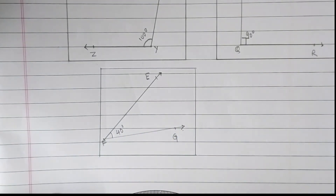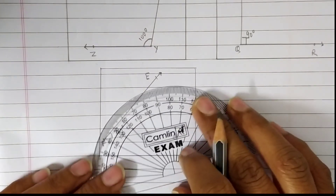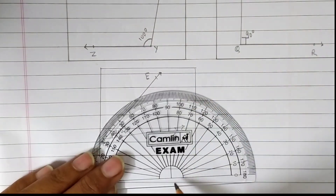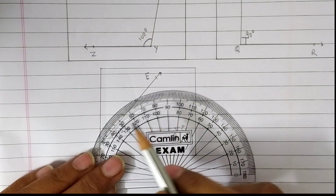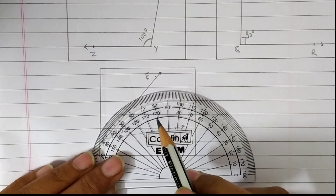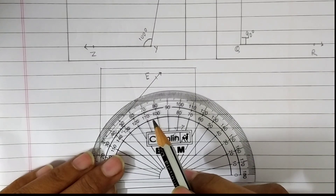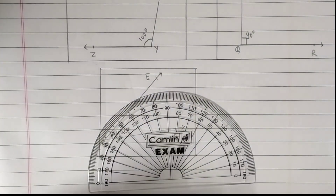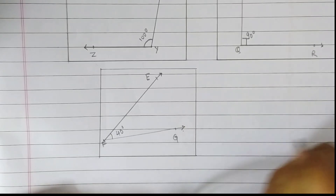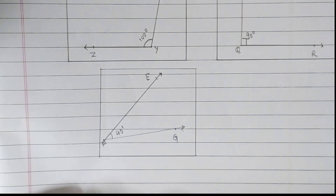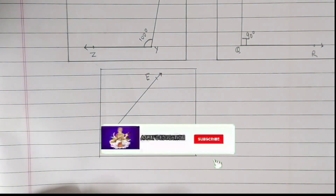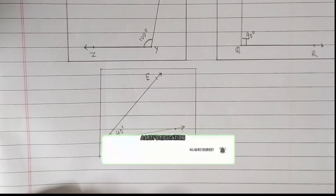It's very easy — you just have to place the center point of the protractor on the vertex of the given angle, and then count from zero. I hope you understand. See you in the next video. Thanks for watching, and don't forget to subscribe to my channel. Thank you.